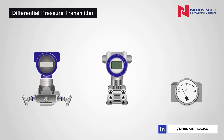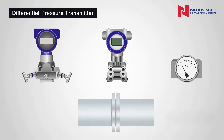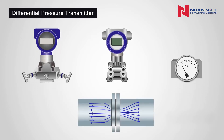Differential Pressure Transmitters. Simply put, a differential pressure transmitter is a device that measures two opposing pressures in a pipe or vessel.